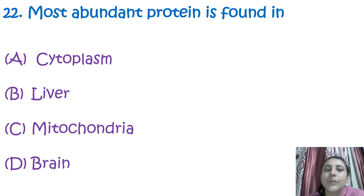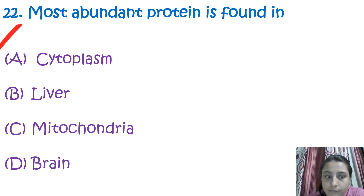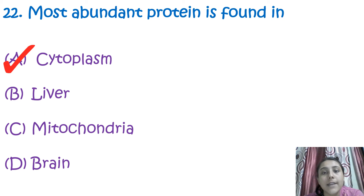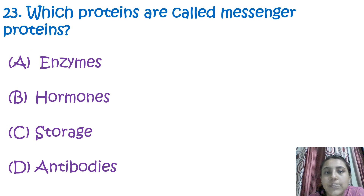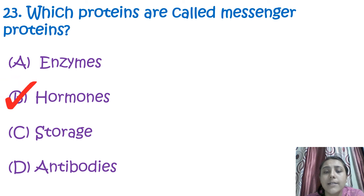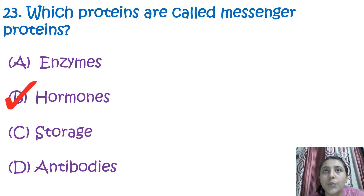The next question is: where is the most abundant protein found? The answer is in the cytoplasm. The next question is: which proteins are called messenger proteins? The answer is hormones — hormonal proteins work as messengers in our body.